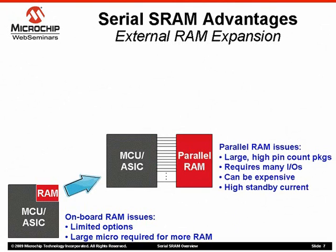Your next option is to use off-chip memory, most commonly parallel RAM. You can certainly get a wide range of densities, up to 128 megabits, and being parallel, it is very fast. But traditional RAM has its own disadvantages. The packages are large, at least 28 pins and often 44, and can be expensive. These large packages take up a good deal of board space. The parallel interface for a 32K byte RAM chip requires an external address and data bus, using 16 to 24 I/O pins, which may not be available on your current microcontroller. Finally, parallel RAM typically has fairly high standby current consumption.